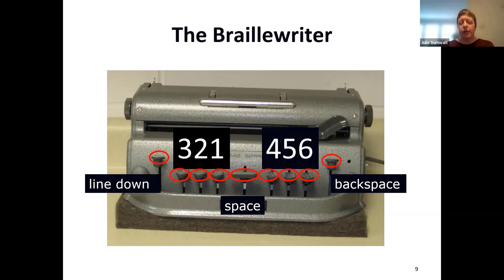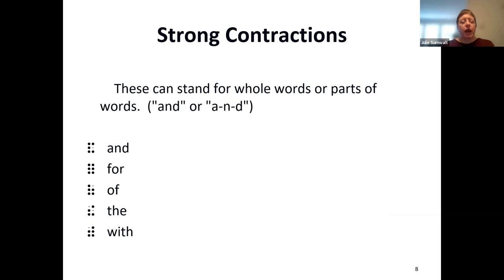If you want to make a braille character that has dots on both sides of the cell — for instance, the contraction for 'and,' which has dots on the left side and the right side — you would push down all at the same time keys 1, 2, 3 on the left and four and six on the right. That would make our whole braille character. Then the braille writer shifts over to the next cell, and you would make the next cell. That's how a braille writer works.